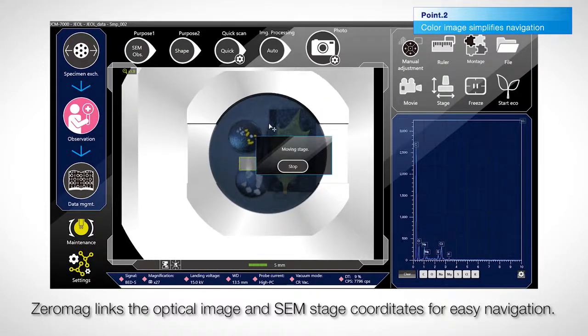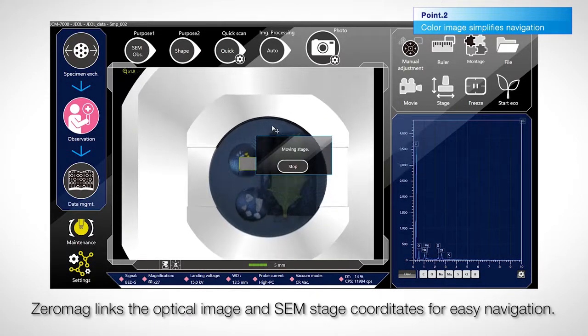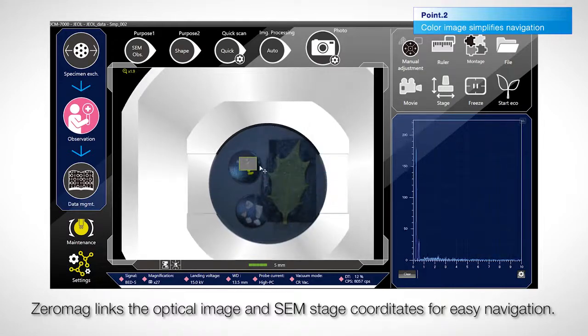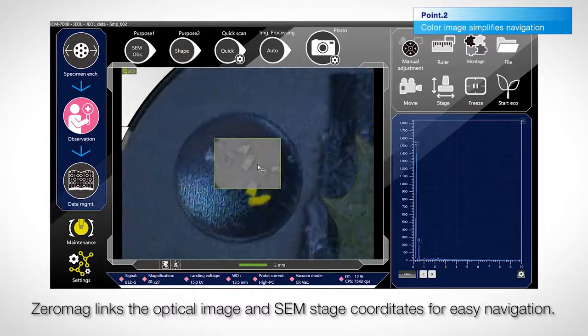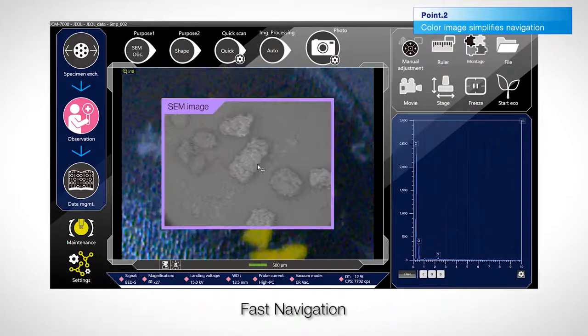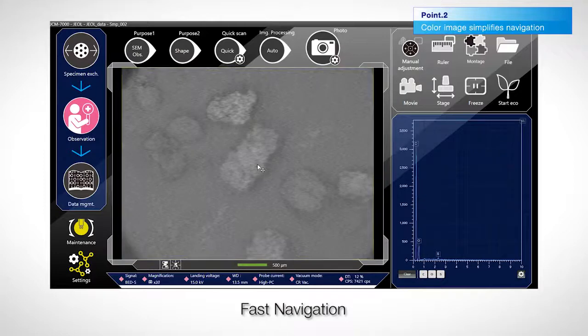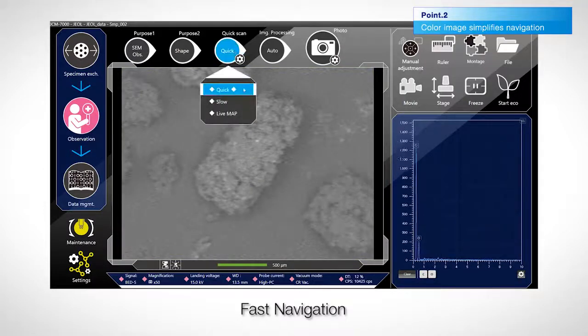Select anywhere on the image to automatically move to that location. Increase the magnification to transition seamlessly from the optical image to the live SEM image. Anyone can quickly find the field of view by selecting the target position from the optical image.